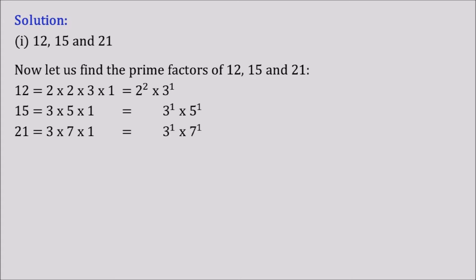Coming to the number 21, we get 3 × 7 × 1, and we can write that as 3 to the power 1 into 7 to the power 1. Both of these numbers are prime numbers.